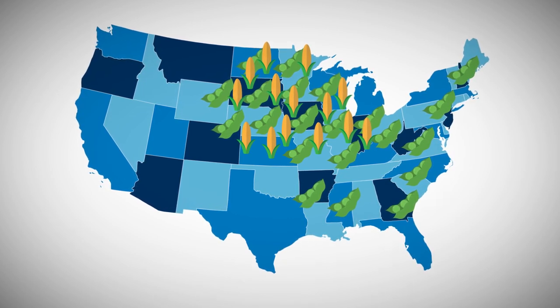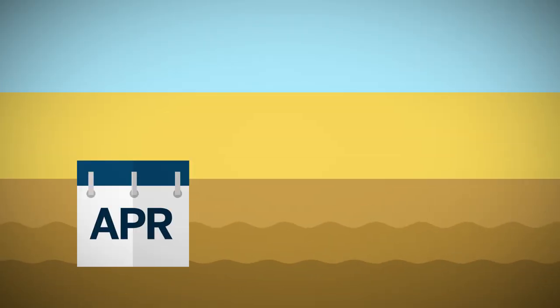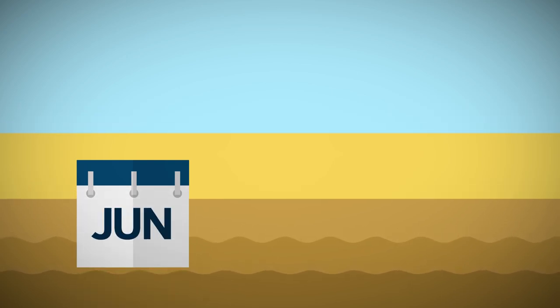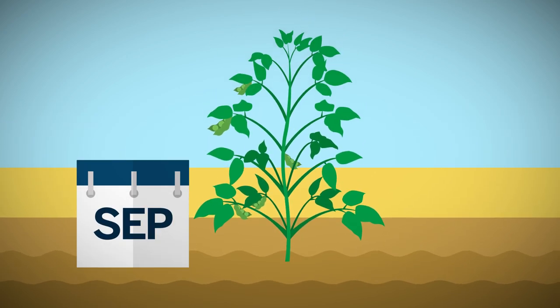In the main part of the soybean belt, planting takes place from late April through June, with harvest beginning in late September and ending in late November.